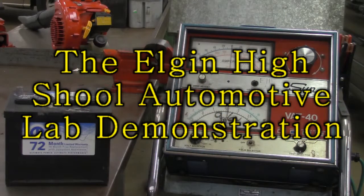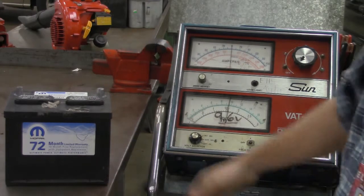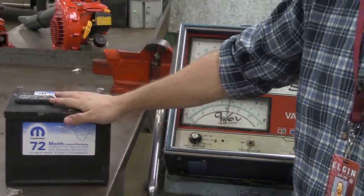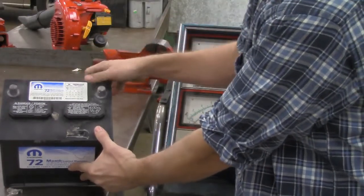Hi, this is Mr. Tiberi. This is another Elgin High School Auto Shop video. We're going to take a look here. We've got a battery that's removed from a vehicle. So this is my battery right here. It's simple enough. This battery is in fact a top post battery. You can see we've got terminals on the top.